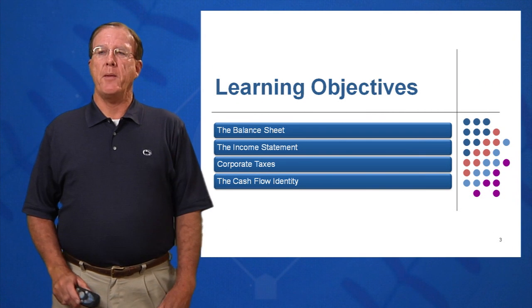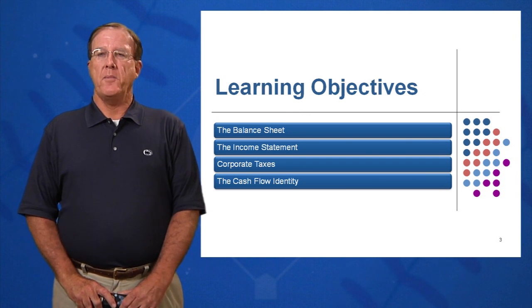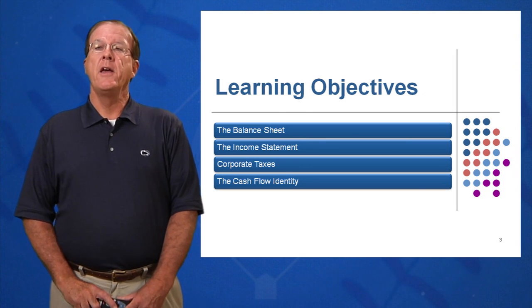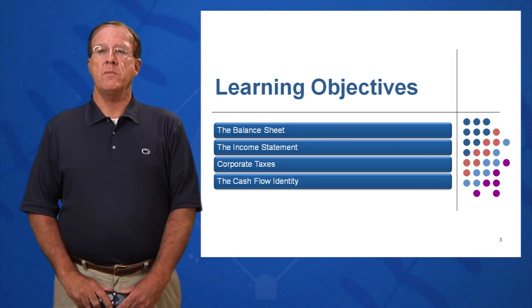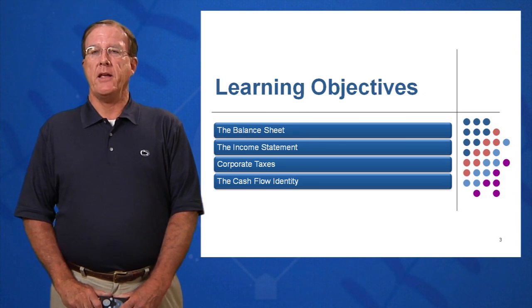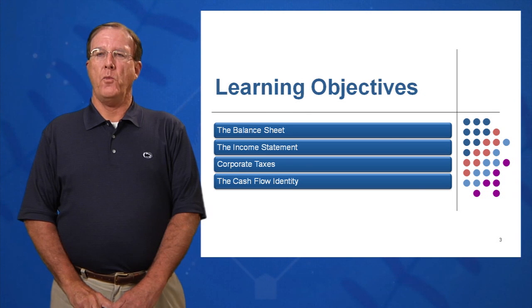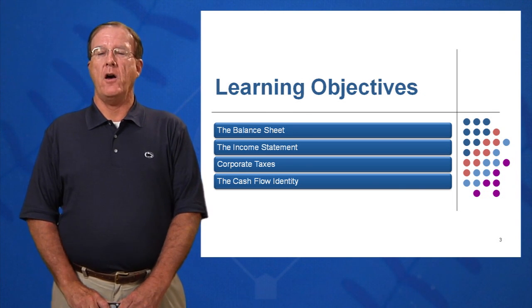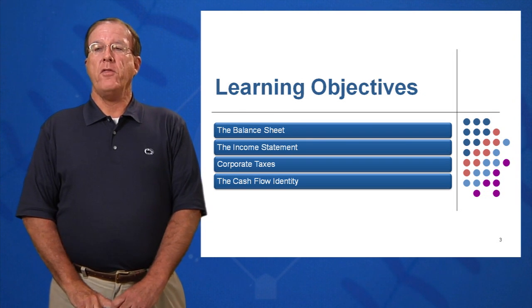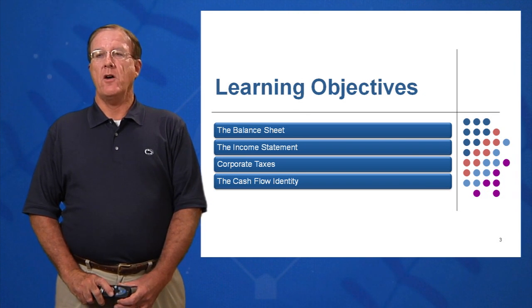The learning objectives — what you want to take away from this session — are: first, an understanding of the balance sheet: what it is, what it's used for, when we prepare it, and how it will help you as a manager. Second, the income statement: what it is, when it's prepared, and how it can be used to your advantage. Third, corporate taxes: what they are, current tax rates, and whether they're a financial or political process. Fourth, cash flow: how to calculate free cash flow.